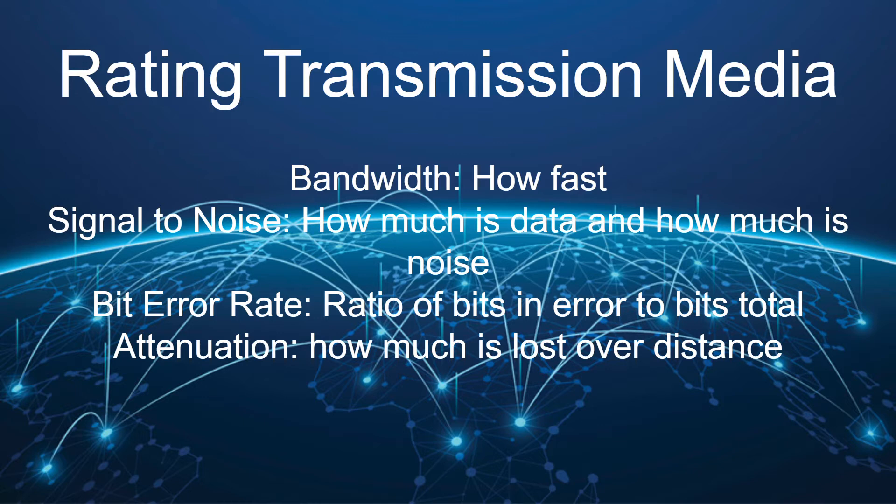The first way of rating transmission media is called bandwidth — that's simply how fast the information can get there. In the minds of most people, bandwidth is the most important factor. When I go to buy internet, bandwidth is what I'm buying. I got new internet last April and they said 500 megabytes per second — that's a bandwidth measurement. BPS (bits per second) is how fast the information can get across that line and reach my computer.